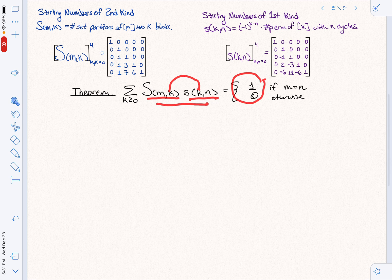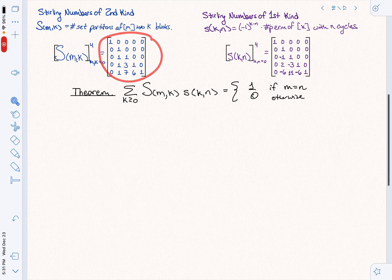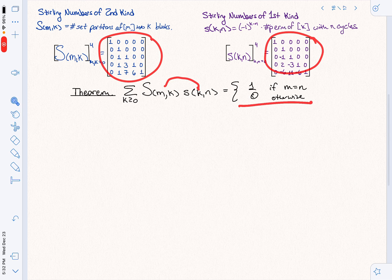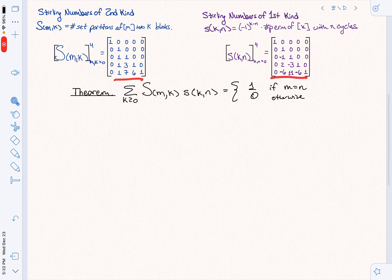What is this type of relationship saying? It's saying that if I take this matrix and multiply it by this matrix, that's what we're doing here, matrix multiplication. What do I get? I get the identity. So these two matrices are inverse to one another.